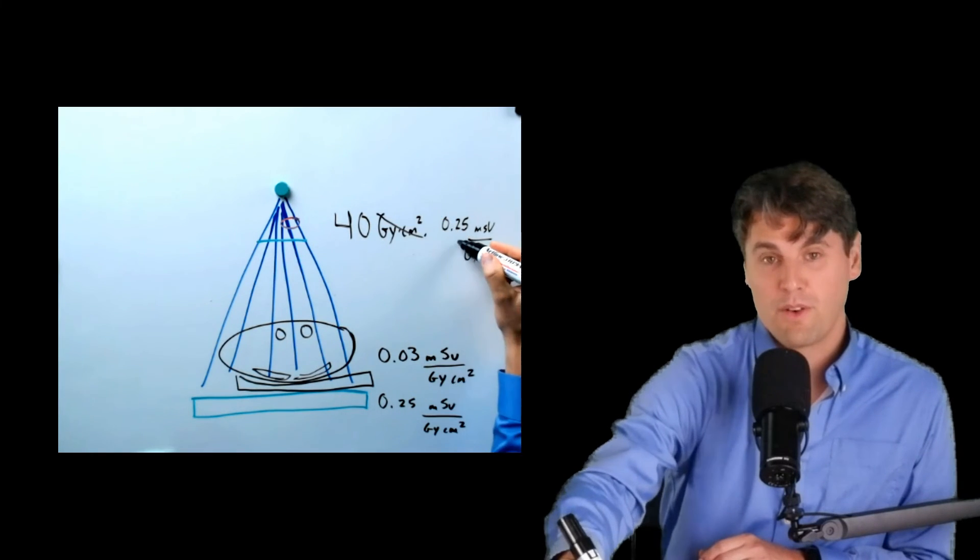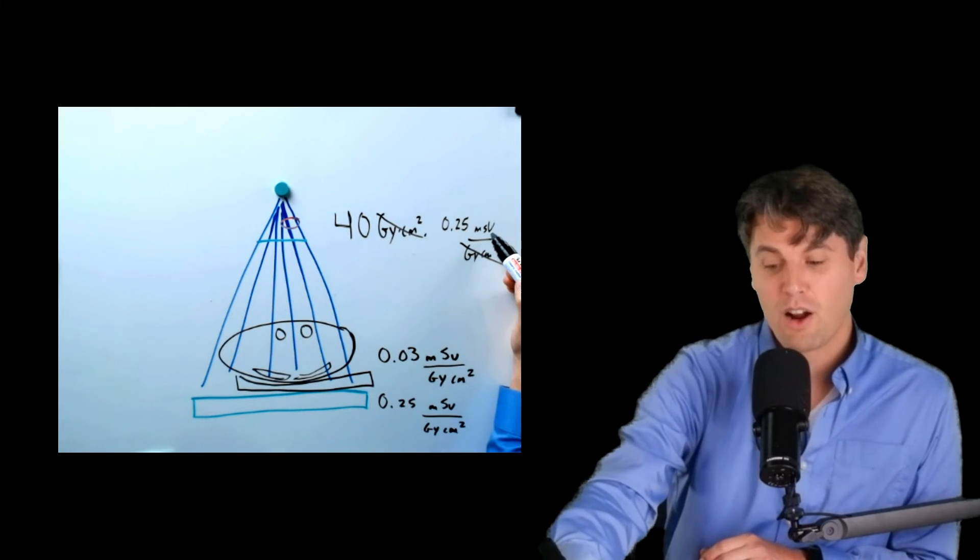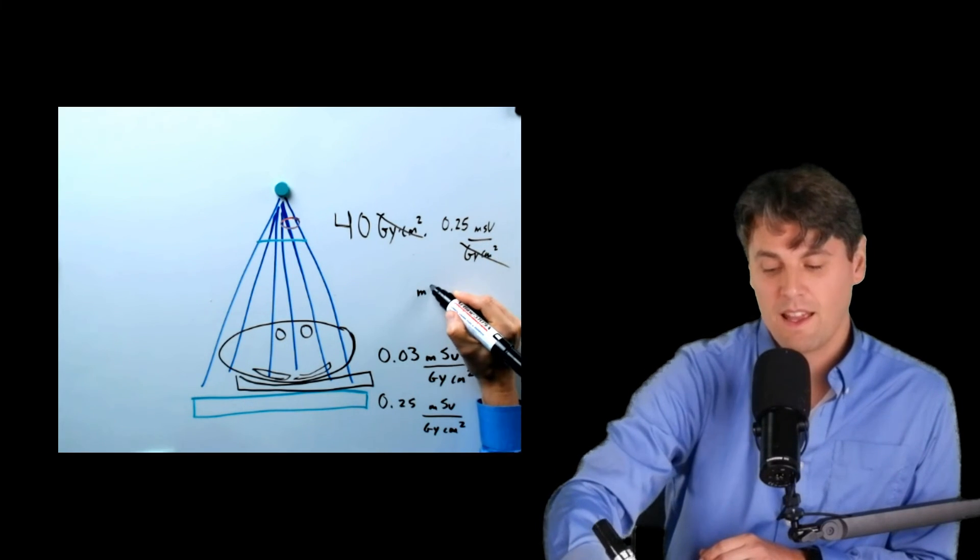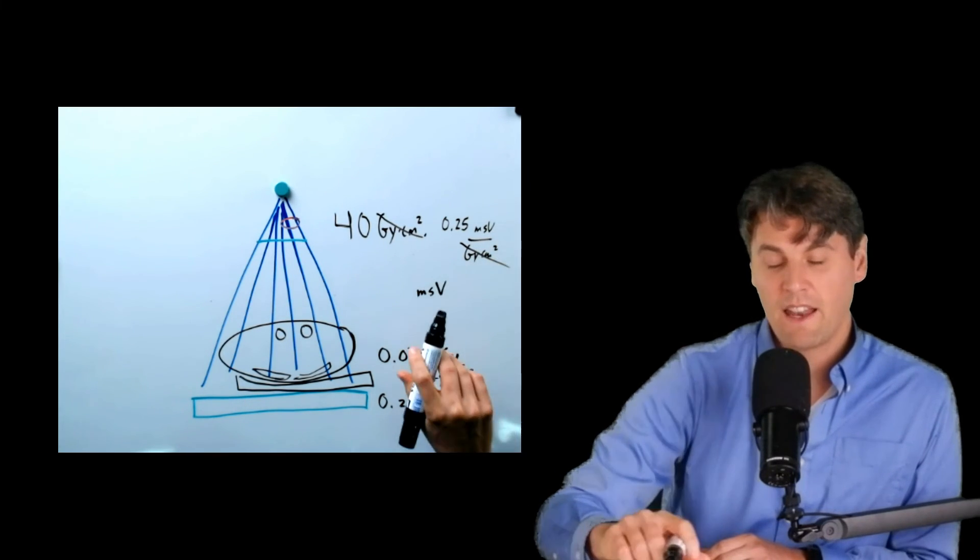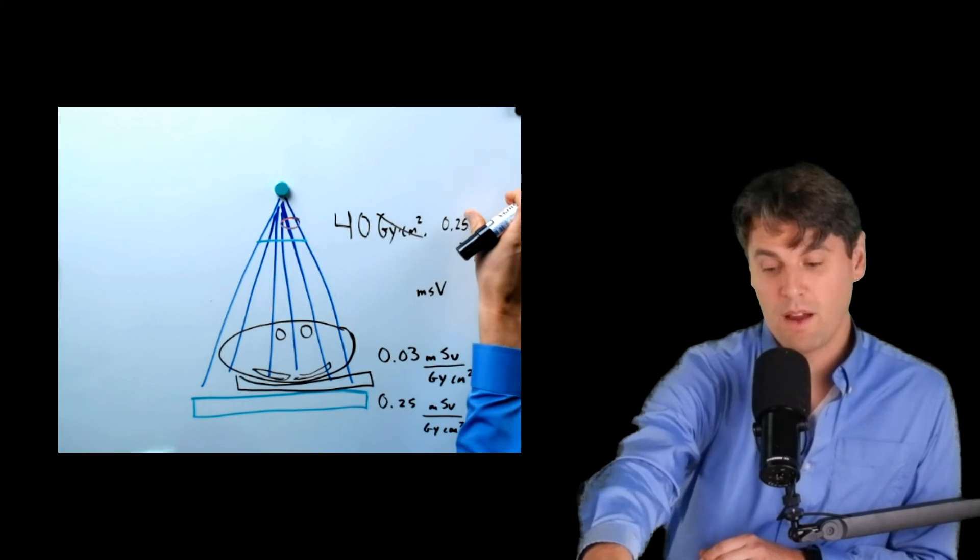And this is so fun, just crossing off terms, so that our dose is actually going to be in millisieverts. And then if you measure four times 0.25, you get one, right? So because we have another zero here, it's actually going to be 10 millisieverts.